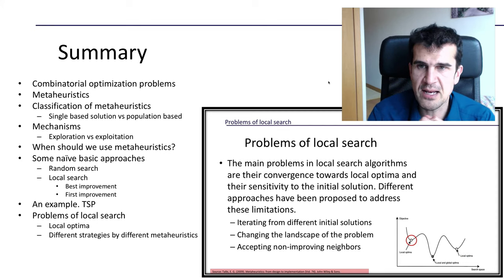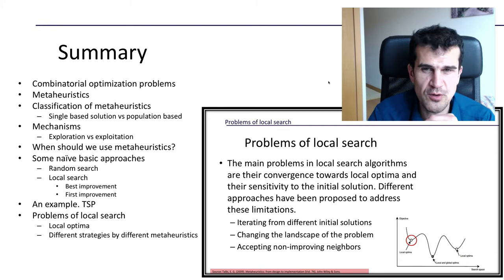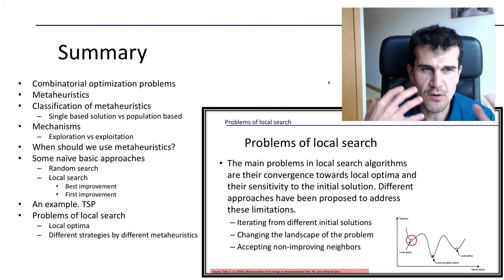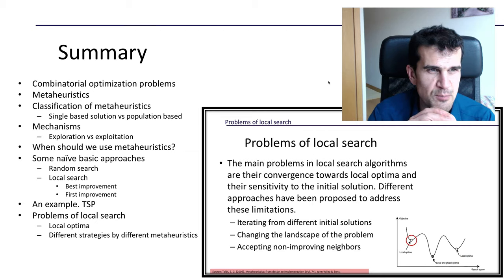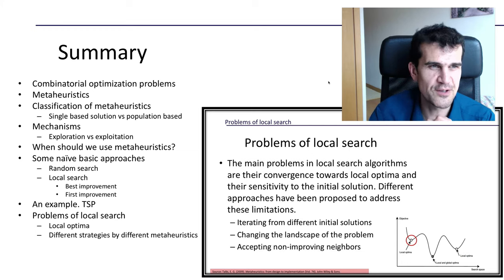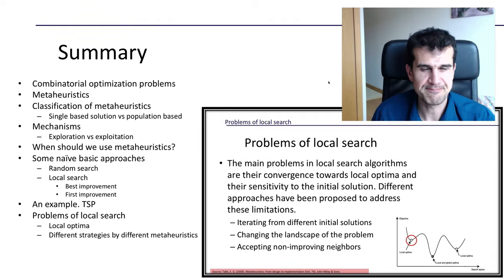To conclude, metaheuristics are a set of general-purpose tools that will usually give us good, satisfactory solutions in very little time, and all of them involve this trade-off between exploration and exploitation. With this, we finish this introduction, and I look forward to seeing you in the next videos. See you later, guys. Bye-bye.